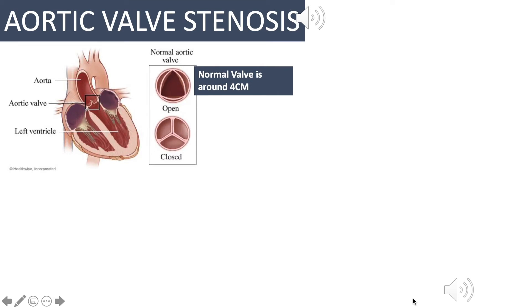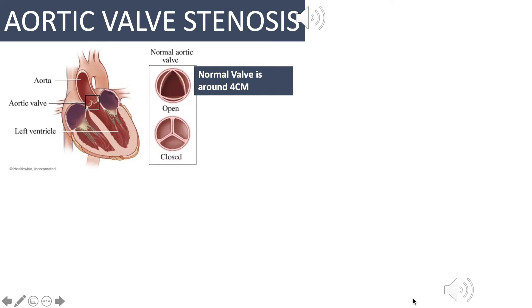Aortic valve stenosis — you all know that the aortic valve is the valve that connects the left ventricle to the aorta. Opening of this valve is what allows the blood from the left ventricle to be pushed around the aorta into the rest of the body. A normal aortic valve is now shown on the screen. Most people have a tricuspid — or three-leaf valve — and a normal aortic valve is usually around four centimeters in diameter.